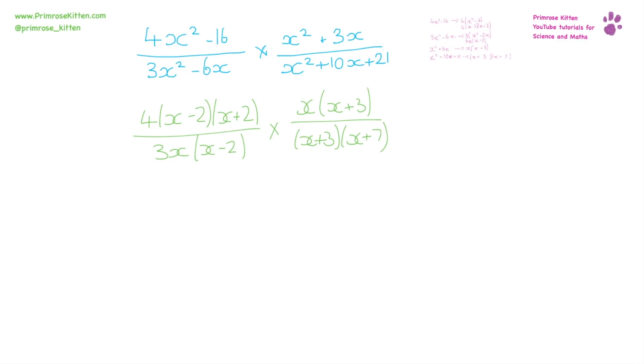because first thing we can do is cancel the (x - 2) on top and bottom, and cancel the (x + 3) on top and bottom.